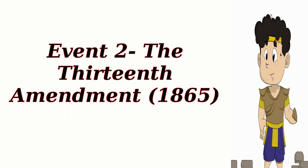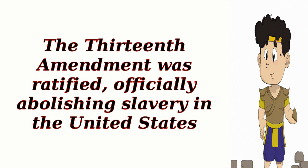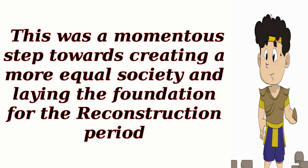Event 2 – The Thirteenth Amendment, 1865. The Thirteenth Amendment was ratified, officially abolishing slavery in the United States. This was a momentous step towards creating a more equal society and laying the foundation for the Reconstruction period.